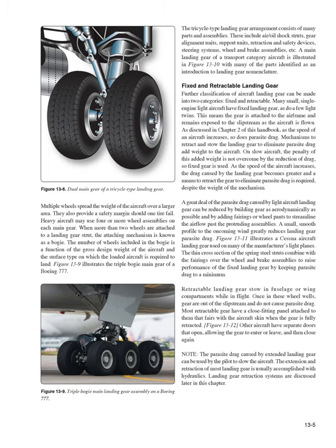The tricycle-type landing gear arrangement consists of many parts and assemblies, including air/oil shock struts, gear alignment units, support units, retraction and safety devices, steering systems, wheel and brake assemblies, etc. Fixed and retractable landing gear: landing gear can be further classified into two categories, fixed and retractable. Many small, single-engine light aircraft have fixed landing gear, as do a few light twins. This means the gear is attached to the airframe and remains exposed to the slipstream as the aircraft is flown.